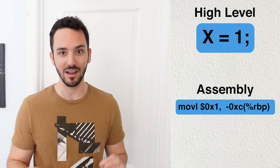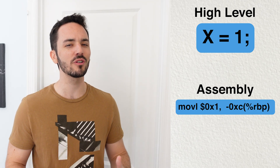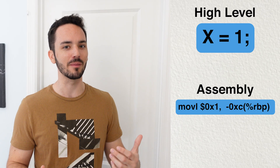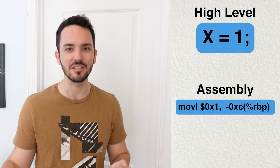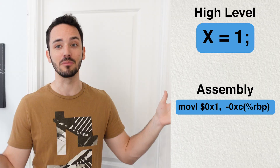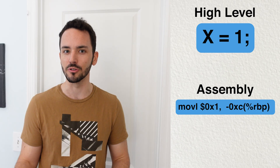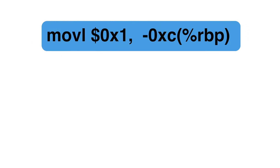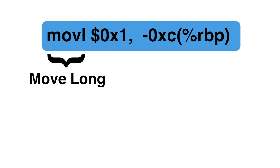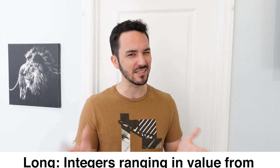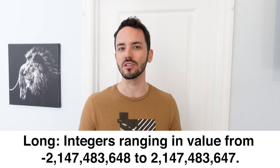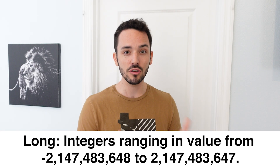You can see right off the bat why this is so much more complex, and why we prefer to use high-level languages to program in. As a programmer, I would much rather type x equals one than have to type in all this. Let's break down this assembly code so you can see what it's actually telling the computer to do. The first part is MOVL, which stands for 'move long.' A long is simply a number in coding ranging from about negative two billion to positive two billion, and you can use this function to move a number anywhere in that range to a very specific point in memory.